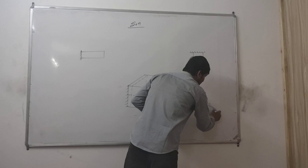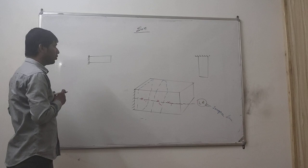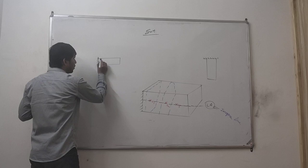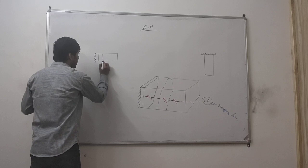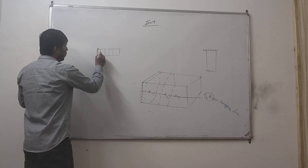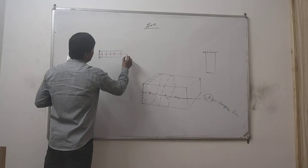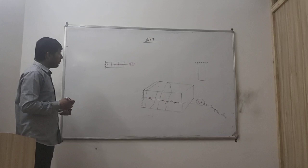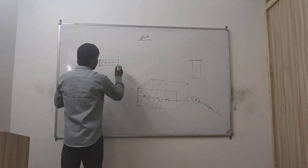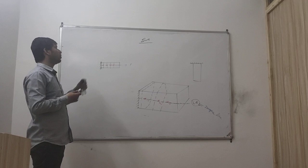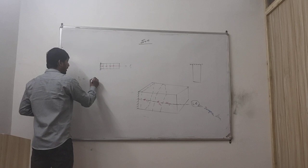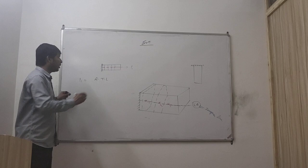Suppose we have a structural member. This is its front view. If you cut the member, each cross-section centroid gives C1, C2, C3, C4, and so on — and the line through them is called the longitudinal axis. If we apply a force P along the longitudinal axis, that force is called an axial load. Specifically, if it is a tensile force, it is called axial tensile load. If it is compressive, it is called axial compressive load.